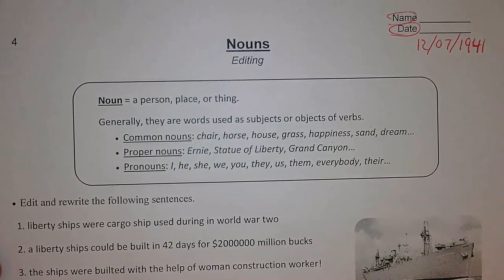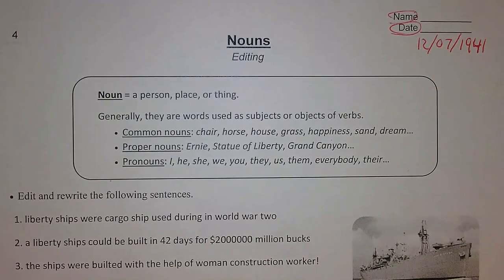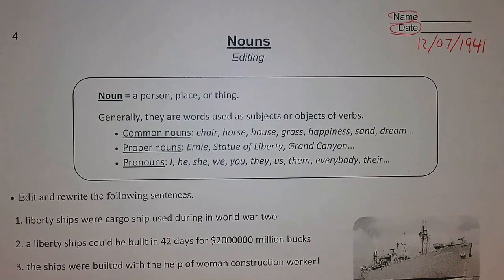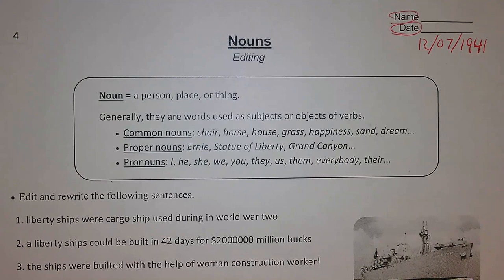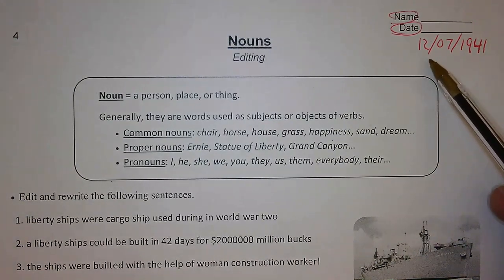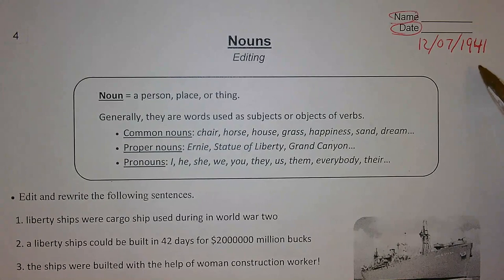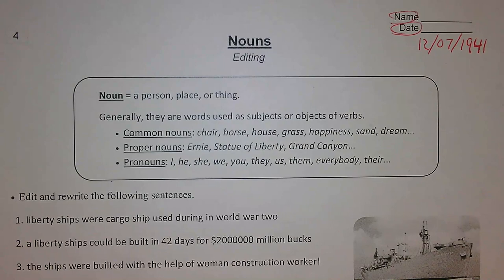December 7th, 1941 is actually a very historical and unfortunately sad day for American history. This was the day that Pearl Harbor in Hawaii was attacked by Japanese military in a surprise attack, and a couple thousand Americans were killed. This was when Japan declared war on the United States, after which the US declared war back, and Germany declared war on us, bringing America into World War II.